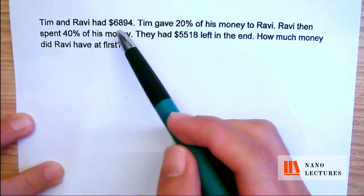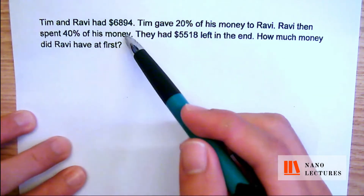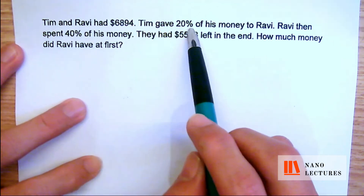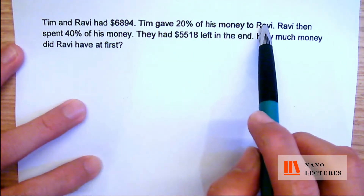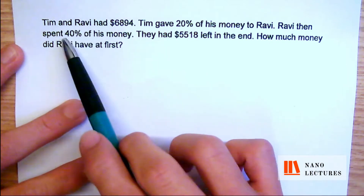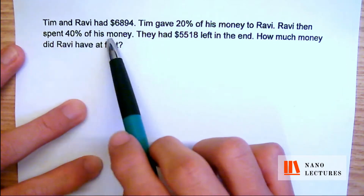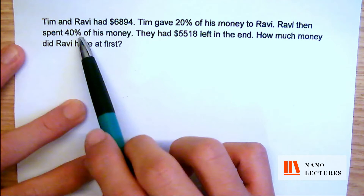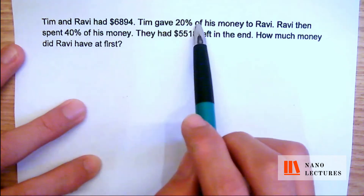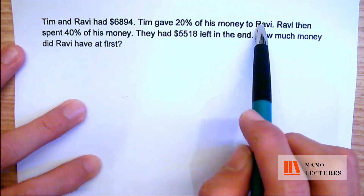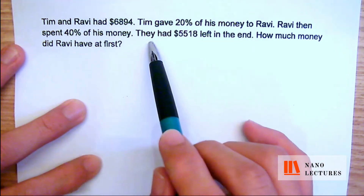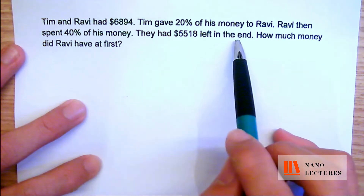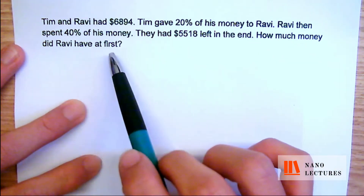Tim and Ravi had $6,894 altogether. Tim gave 20% of his money to Ravi. Ravi then spent 40% of his money — that's 40% of his original sum plus 40% of the 20% that Tim gave to Ravi. They had $5,518 left in the end. How much money did Ravi have at first?